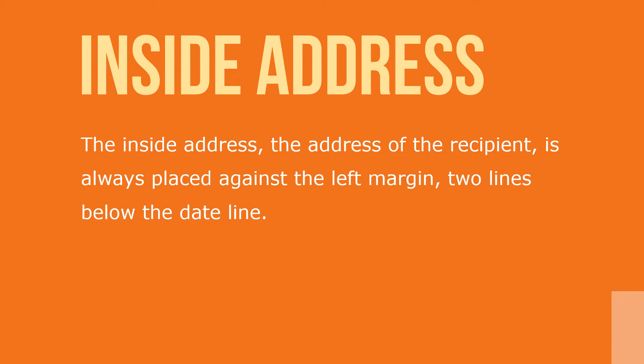Next is the inside address — the address of the recipient — which is always placed against the left margin, two lines below the dateline. It contains the name, title if any, company, street address, city, state, and zip code of the person to whom you're writing. Single space the inside address and do not use any punctuation at the end of the lines.